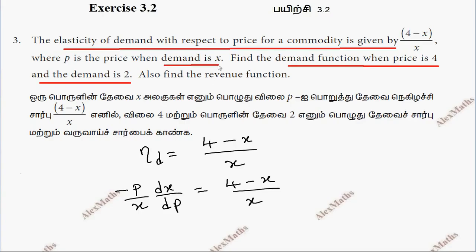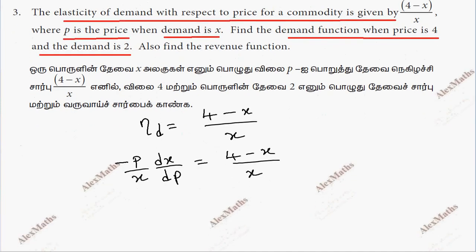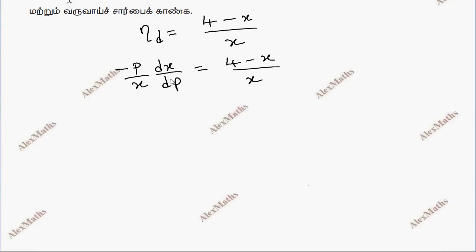When p equals 4 and x equals 2, we need to find the demand function. So we'll solve this using the variable separable method.